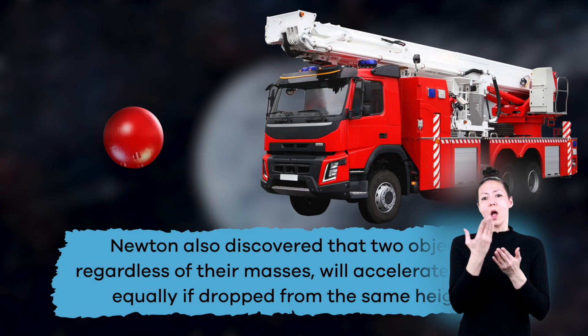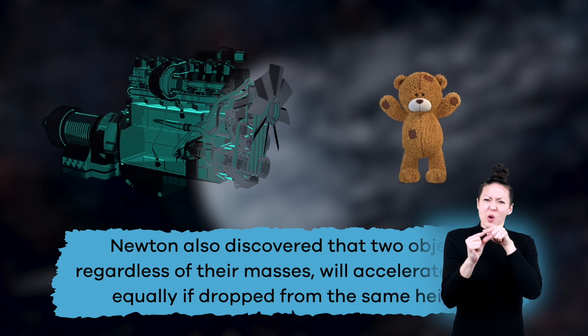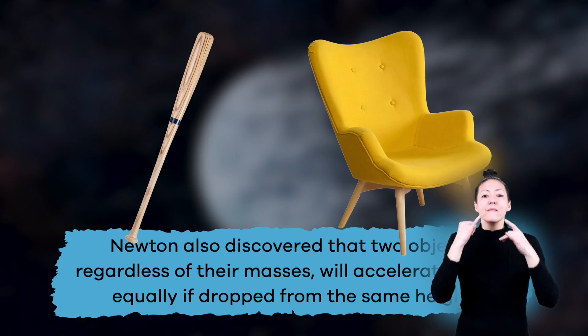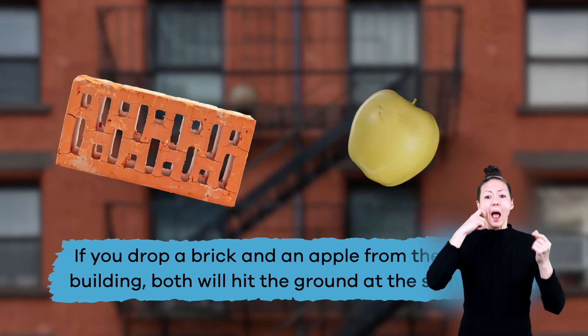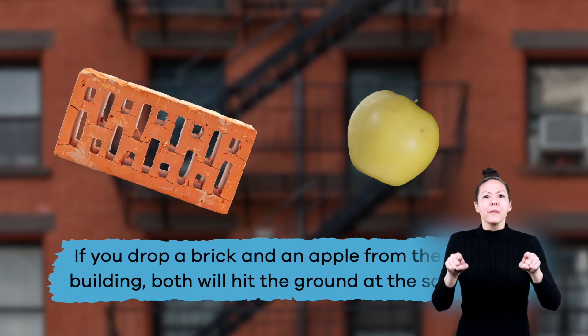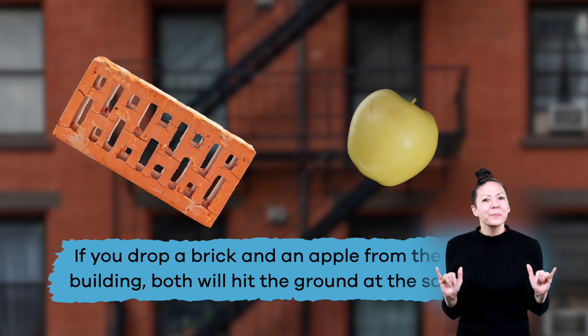Newton also discovered that two objects, regardless of their masses, will accelerate or fall equally if dropped from the same height. For example, if you drop a brick and an apple from the top of a building, both will hit the ground at the same time.